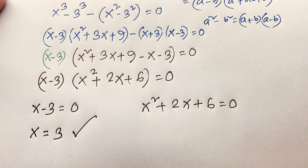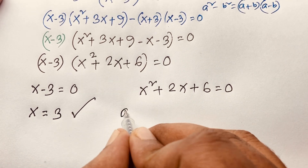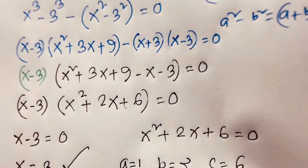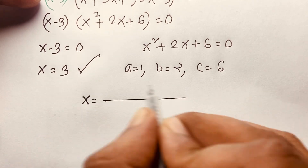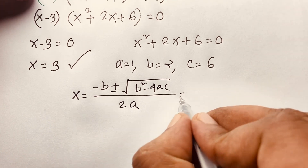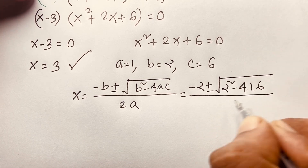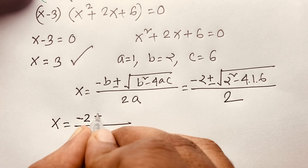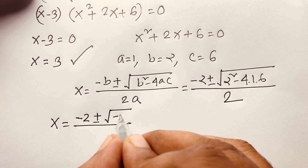Now for the quadratic equation x squared plus 2x plus 6 equals 0, where a equals 1, b equals 2, and c equals 6, we use the quadratic formula: x equals minus b plus or minus square root of b squared minus 4ac, over 2a. Substituting: x equals minus 2 plus or minus square root of 2 squared minus 4 times 1 times 6, over 2 times 1. That gives x equals minus 2 plus or minus square root of 4 minus 24, over 2, which is minus 2 plus or minus square root of negative 20, over 2.